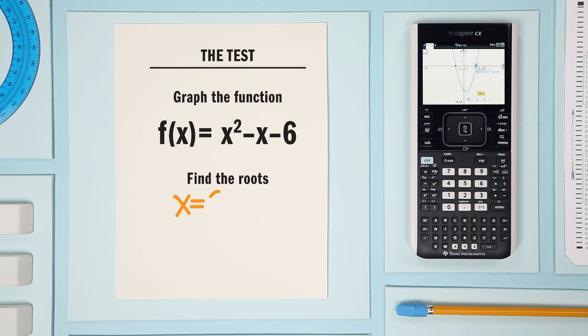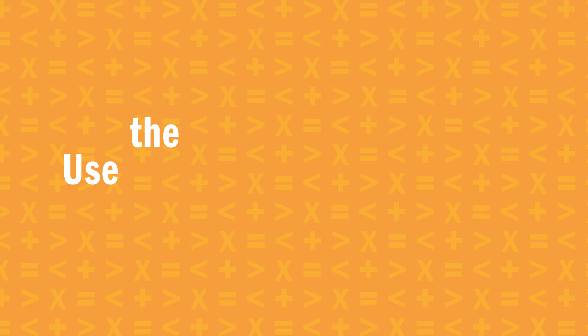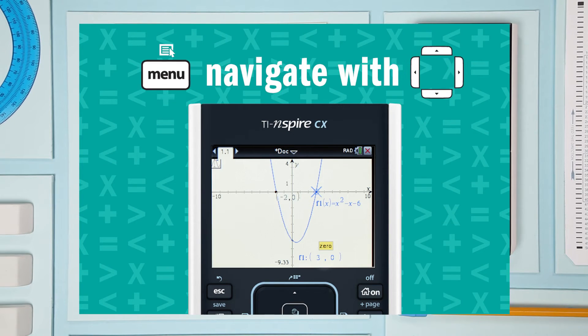Great! You found the roots. Now let's find the coordinate of the minimum. You can do that with the analyze graph feature. Press menu, select analyze graph,